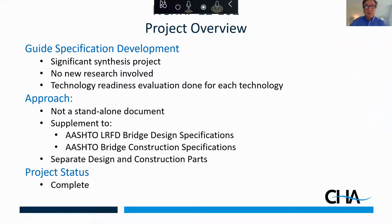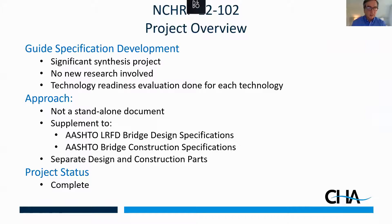A quick project overview: the project that led to the development of the specification was NCHRP Project 12-102. It was a significant synthesis project. We took literally hundreds of research projects done across the United States and around the world and synthesized them into a design specification and a construction specification. There are separate design and construction parts, and it is available — you have to purchase it through AASHTO — but it really is a comprehensive ABC manual that is very useful.